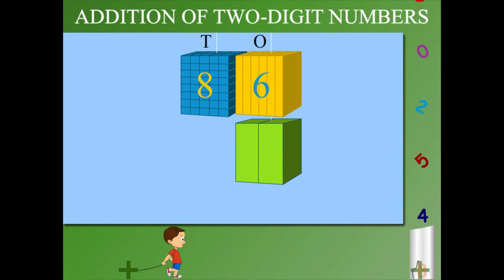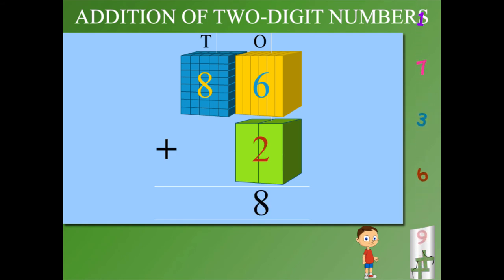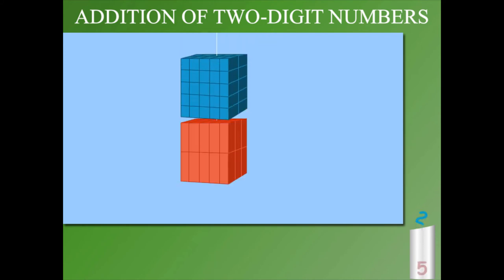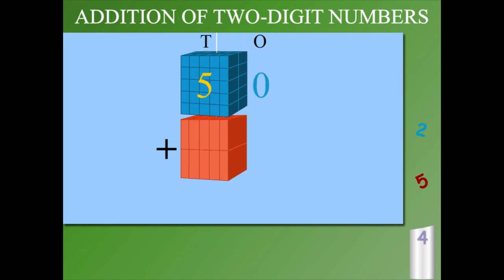It is 86 plus 2. Add only the ones, 6 plus 2 is 8. And copy the tens, it's 88. And now it's 50 plus 10.